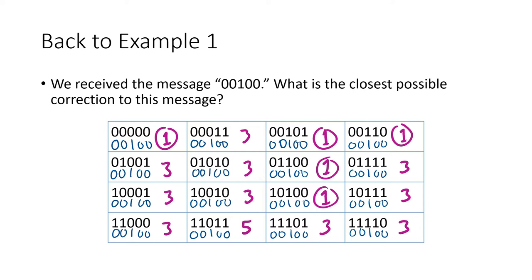Unfortunately, what we see is a five-way tie. There are five messages that are all one digit away from the message that we received. This means we're not going to be able to correct the error, because we don't know which of these five code words was the one actually sent — they're all exactly one away.